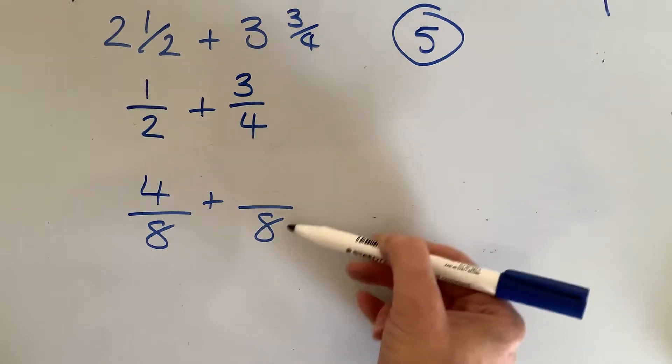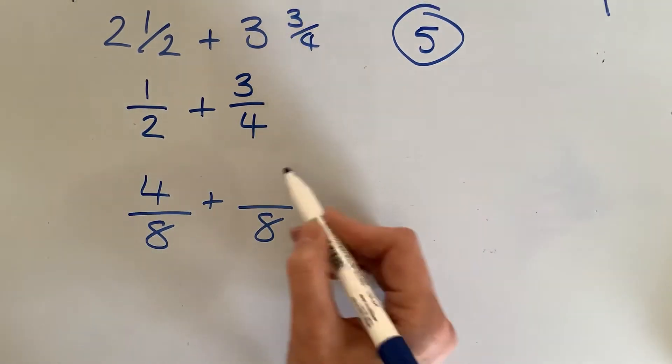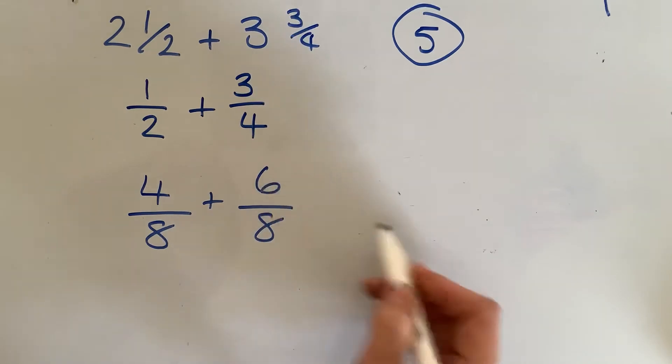This side, how many 4's are in 8, well it's 2, so I've got to times the top number by 2, 3 2's are 6.